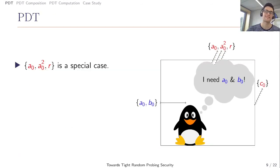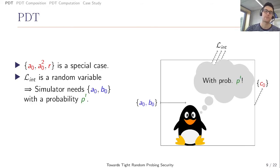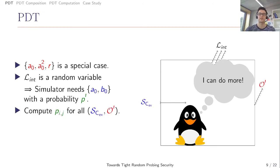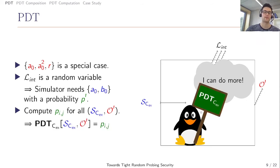Remember that this internal leakage is only a special case. A0 and A0 square and R only leaks with a special probability. Since the internal leakage is randomized by the leakage probability P, we know that the simulator only needs these input wires A0 and B0 with a given probability P prime. We can compute this for all combinations of input values and output values. When we compute all these probabilities, we have a table. The resulting table is our prop distribution table.